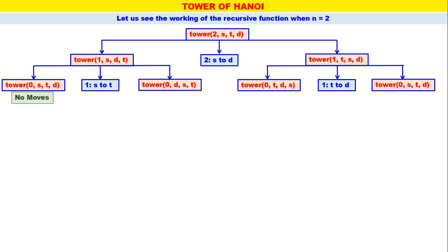On the right side, one disk has to be moved from Temporary to Destination: zero disks move from Temporary to Destination, disk number 1 is moved from Temporary to Destination, and zero disks move from Source to Destination. In the leftmost leaf, since n is equal to 0 there are no moves; disk number 1 is moved from Source to Temporary, and here also no moves. The second move is disk number 2 moved from Source to Destination. Again here no moves since n is equal to 0. The third move is disk number 1 moved from Temporary to Destination, and here also no moves. This is the call tree for Tower when n is equal to 2.